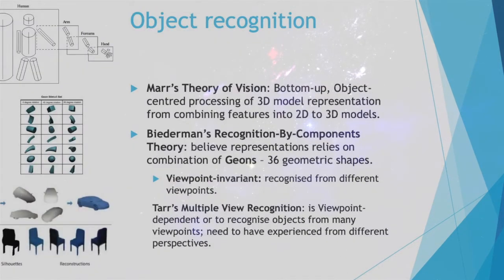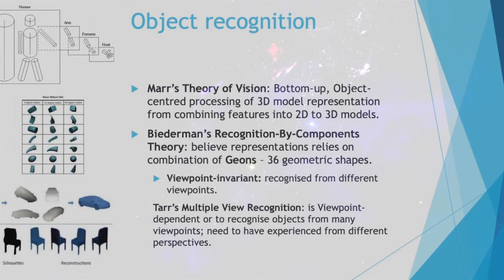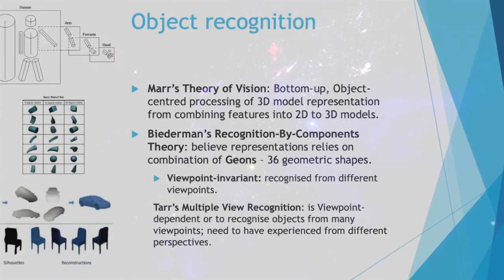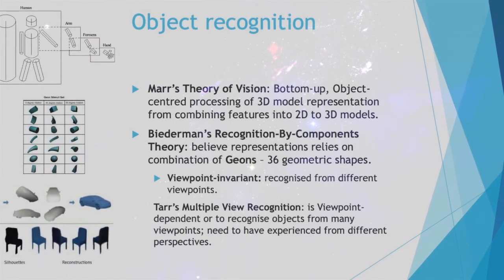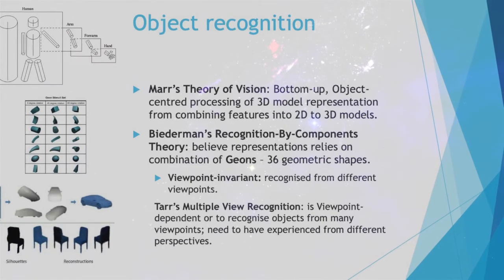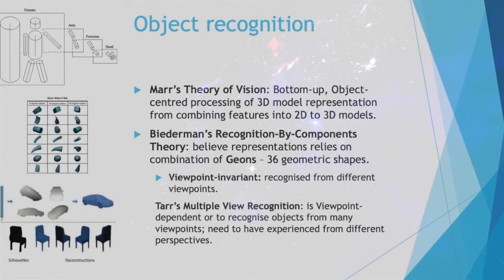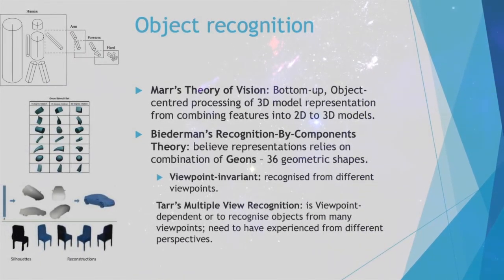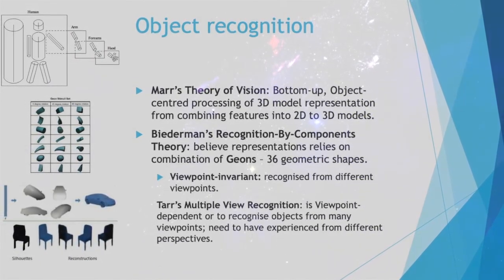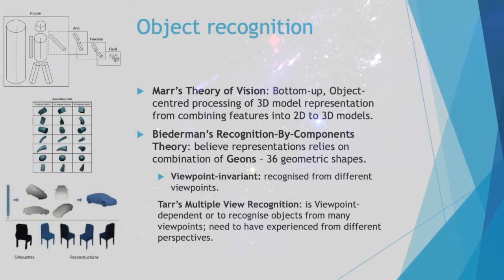Object Recognition — I'll talk about the different theories of how individuals recognize objects. Marr's theory of vision proposed a bottom-up process, whereby there was object-centered processing of 3D model representations, involving combining features from 2D to 3D models.